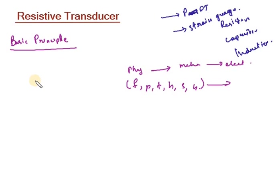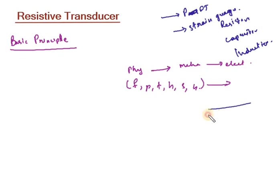The basic principle of this kind of transducer is very simple. The resistance of a conducting wire is given by a specific equation. This is the basic principle of a metal wire.